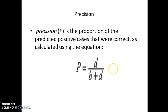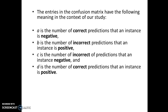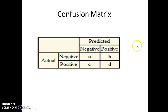Precision is the proportion of predicted positive cases that were correct. It is calculated using the equation D / (B + D). We have predicted some instances as positive — that is B plus D — and D among those are correct. So overall, D upon B plus D gives us the precision.